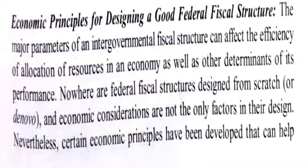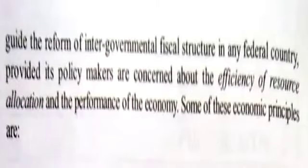Economic principles for designing a good federal fiscal structure. The major parameters of an intergovernmental fiscal structure can affect the efficiency of allocation of resources in an economy as well as other determinants of its performance. Federal fiscal structures are never designed from scratch, and economic considerations are not the only factor in their design. Nevertheless, certain economic principles have been developed that can help guide the reforms of intergovernmental fiscal structures in any federal country, provided its policymakers are concerned about the efficiency of resource allocation and the performance of the economy.